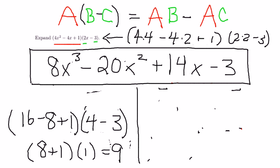Now, the question is, when I plug it into my expanded form, 8x cubed minus 20x squared plus 14x minus 3, do I get the same answer? So, 8x cubed is going to be 8 times 2 cubed minus 20 times 2 squared plus 14 times 2 minus 3.